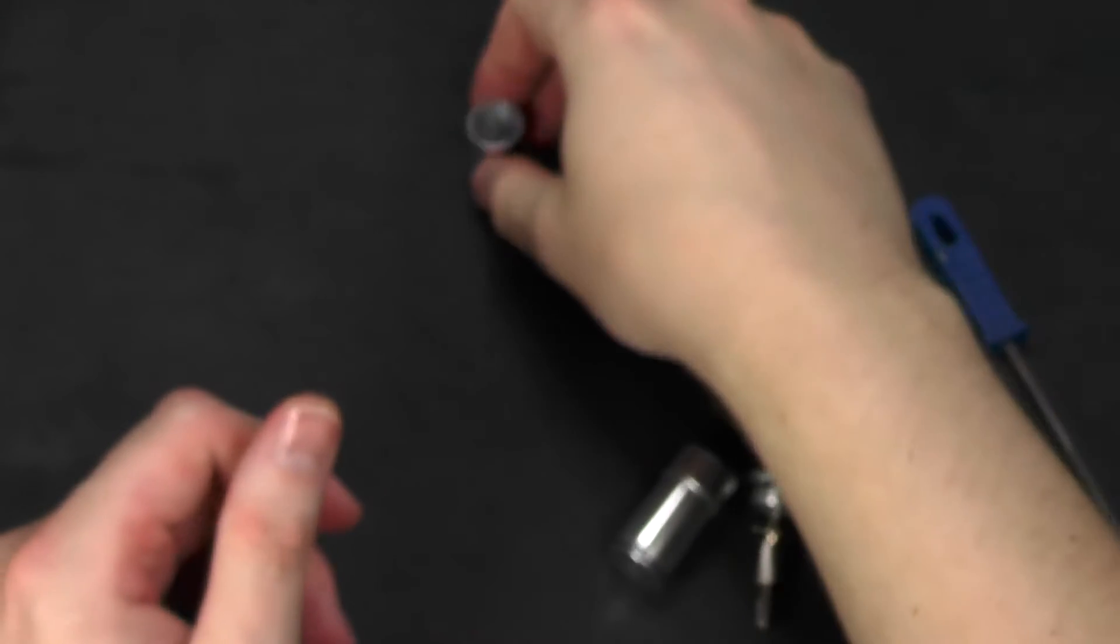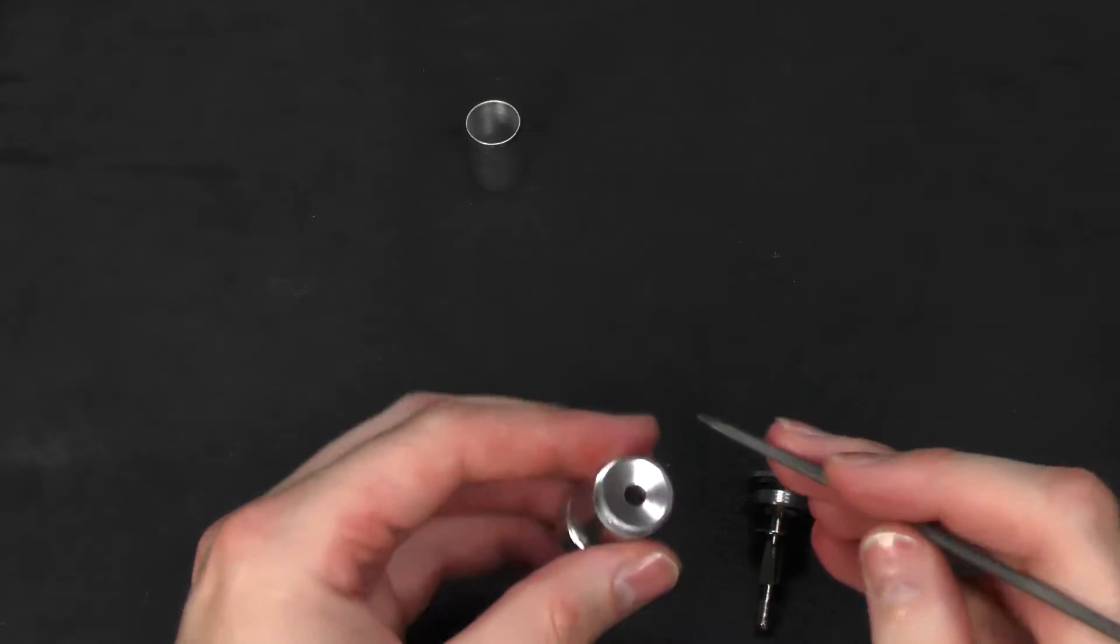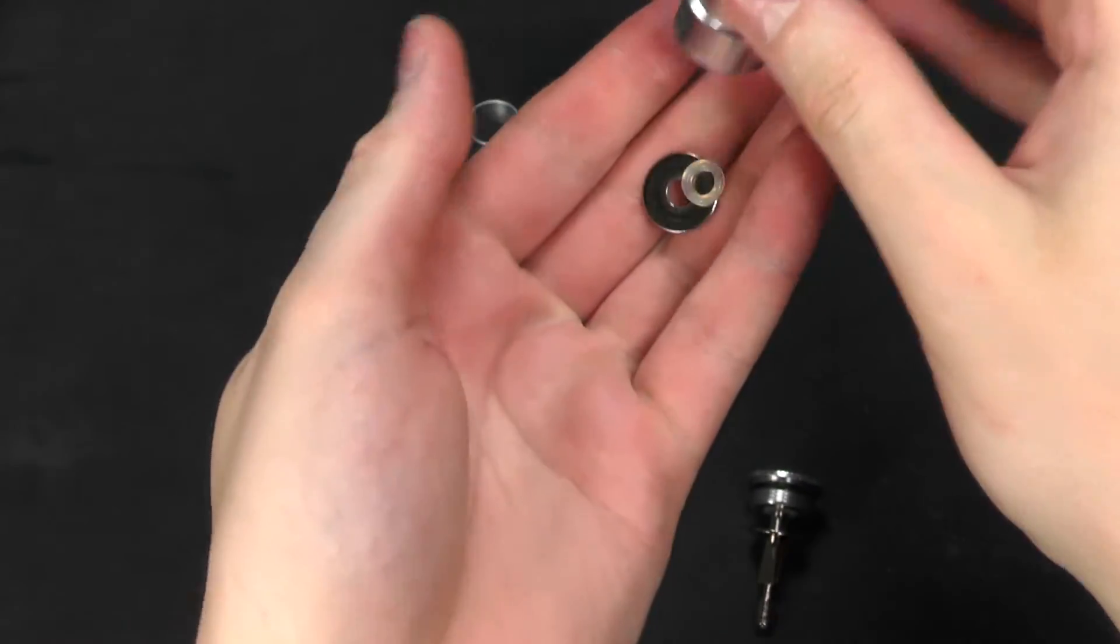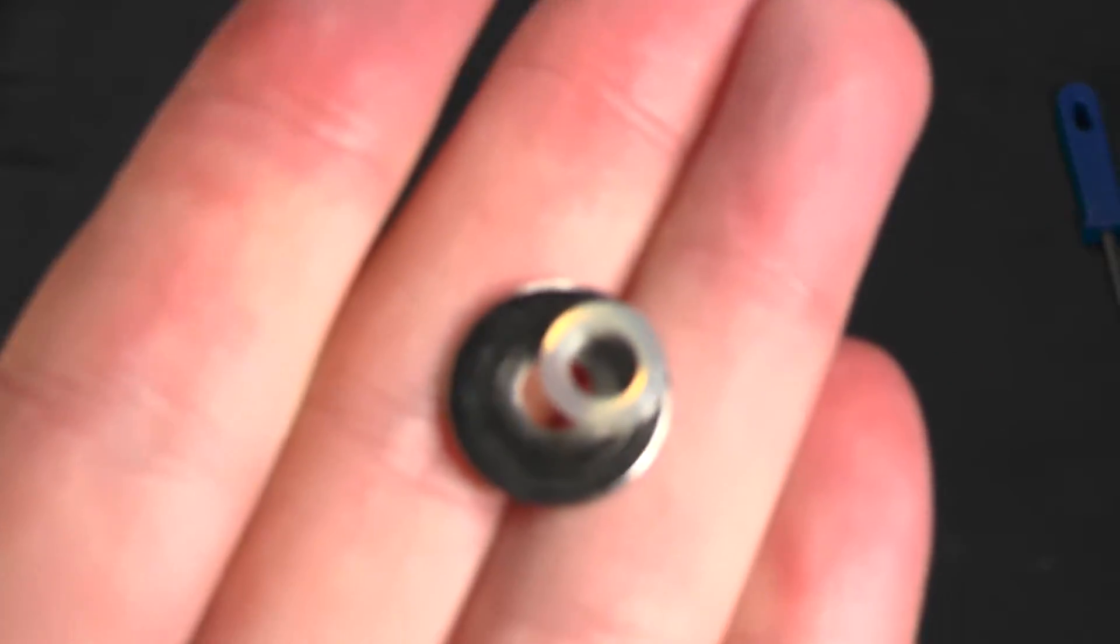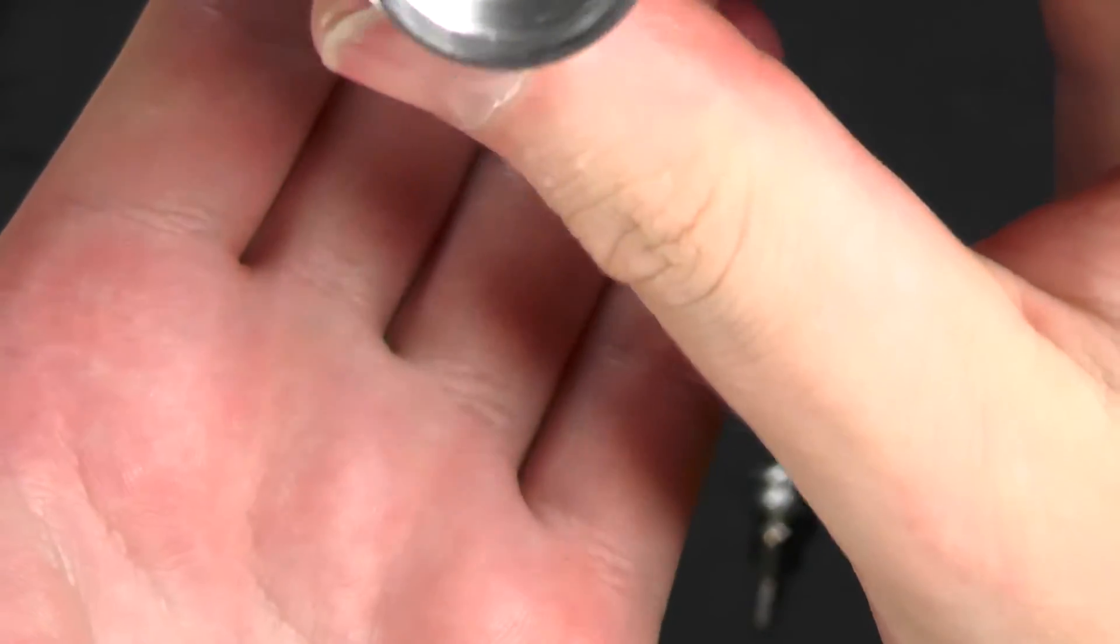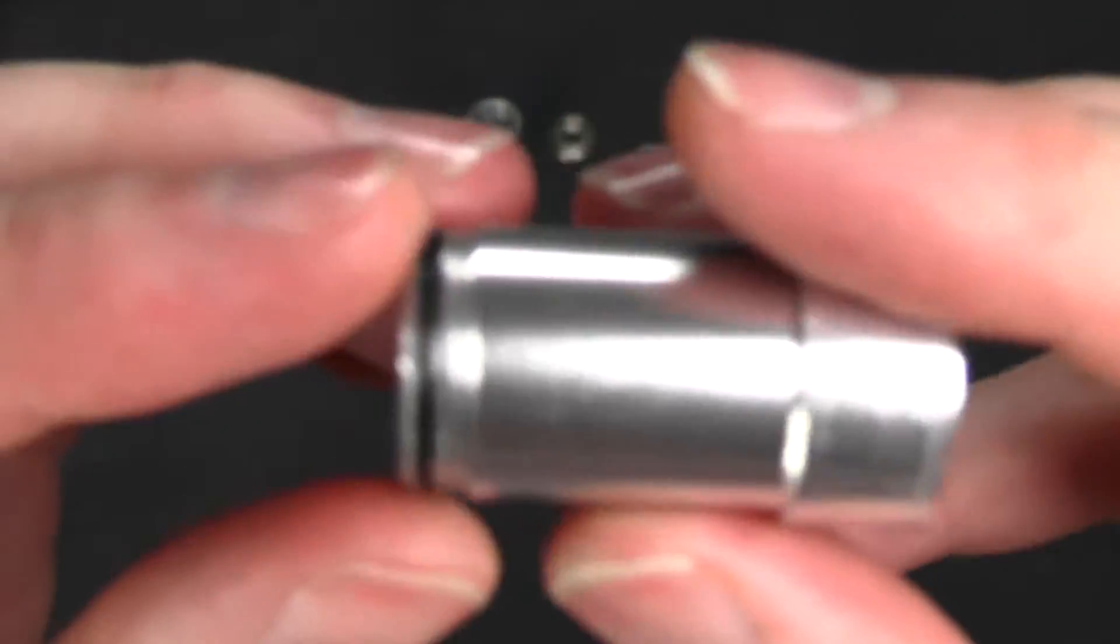So we can put that to the side. Go ahead and just nudge these two pieces out. You can see there's the o-ring and the washer, and this is now empty. The only thing that's left on here is the bottom o-ring.